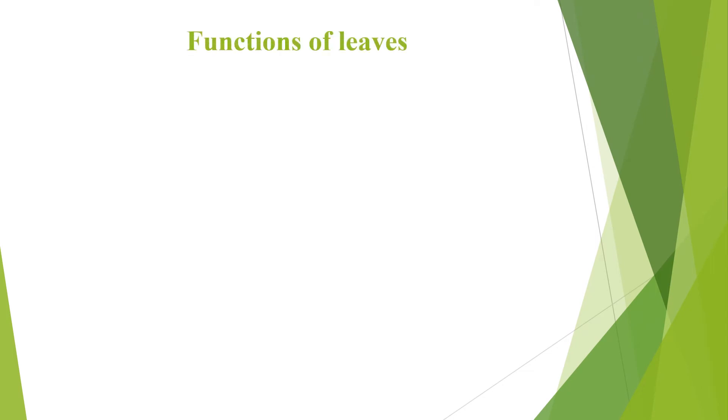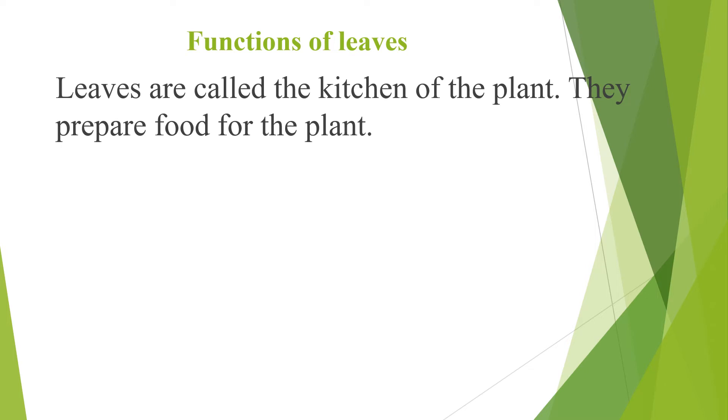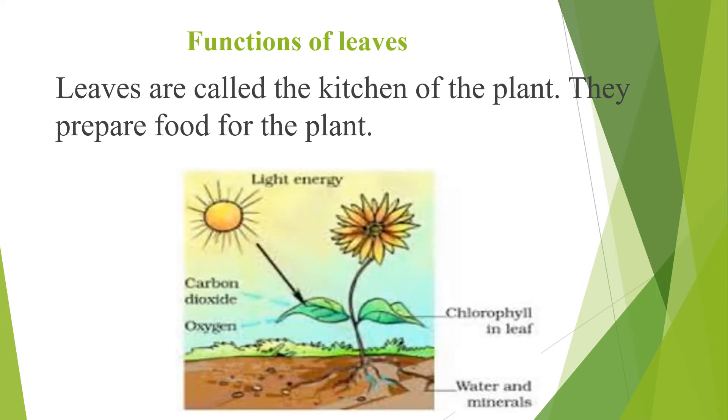Functions of leaves. Leaves are called the kitchen of a plant. They prepare food for the plant. The sunlight is coming from here and chlorophyll is present on the leaves. It is getting water and minerals from the soil. It is taking in carbon dioxide and it is releasing oxygen during the process of making food.